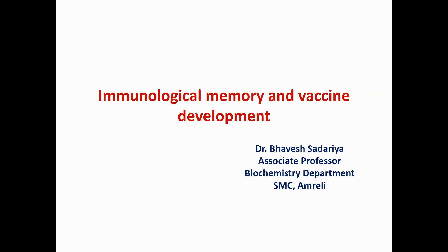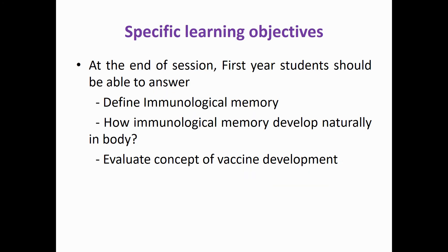This session is on immunological memory and vaccine development. The specific learning objectives are: at the end of this session you should be able to define what immunological memory is, how immunological memory develops naturally in the body, and evaluate the concept of vaccine development and why vaccination of children is routinely given according to the national immunization schedule.